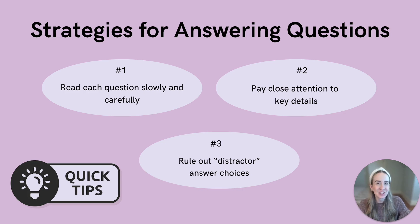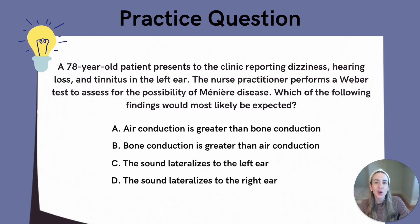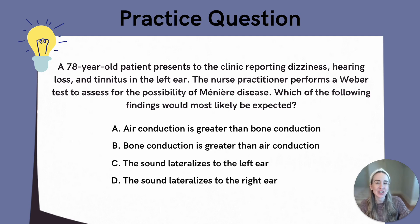So with this in mind, let's jump right in. A 78-year-old patient presents to the clinic reporting dizziness, hearing loss, and tinnitus in the left ear. The nurse practitioner performs a Weber test to assess for the possibility of Meniere disease. Which of the following findings would most likely be expected? A: air conduction is greater than bone conduction. B: bone conduction is greater than air conduction. C: the sound lateralizes to the left ear. Or D: the sound lateralizes to the right ear.